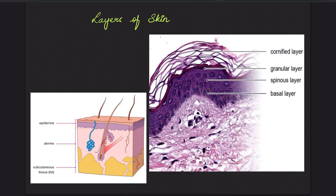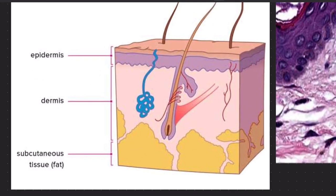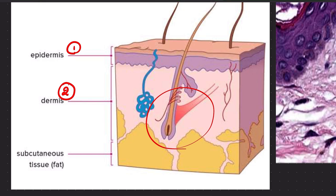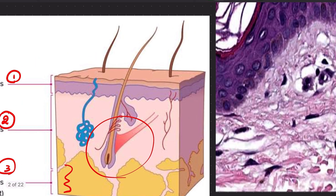Firstly, let us look into the layers of the skin. Skin has three layers. Firstly, epidermis. Second is the dermis, containing the pilosebaceous units, the hair follicle, sebaceous glands, and sweat glands. And lastly, hypodermis, containing the adipose tissue.